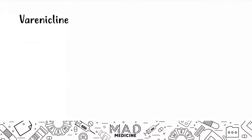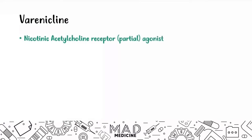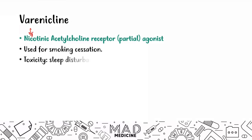The next drug is varenicline. Varenicline acts like nicotine as a partial agonist of the nicotinic acetylcholine receptors. It's primarily used for smoking cessation. Because it agonizes nicotinic acetylcholine receptors, the toxic side effects are similar to nicotine: sleep disturbances — since nicotine is a CNS stimulant — and depressed mood. That's all you need to know for varenicline.